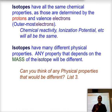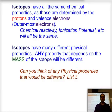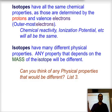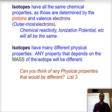Because isotopes are the same element, and the properties of an element are determined by the protons and their attraction to the valence electrons, isotopes will have exactly the same chemical properties — the same chemical reactivity, ionization potential, oxidation potential, and so on.